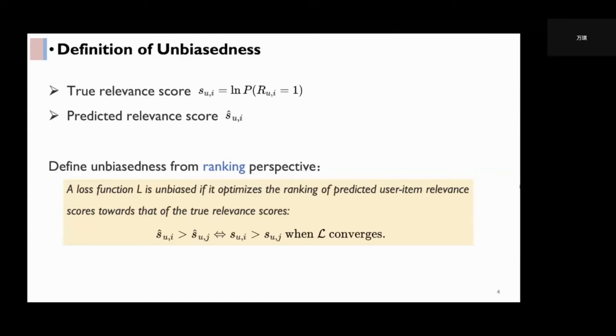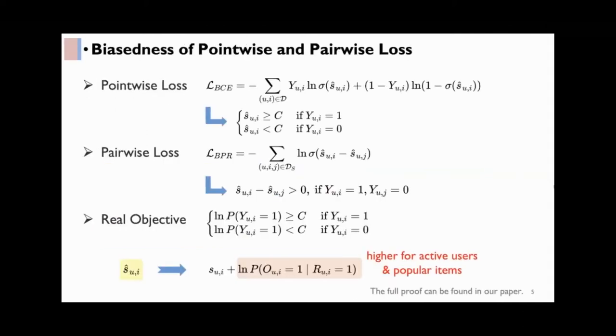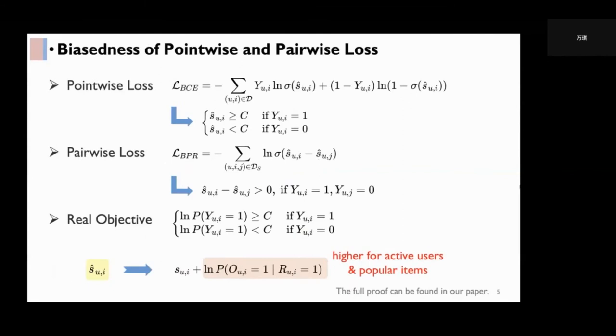Point-wise loss like binary cross-entropy BCE and pairwise loss like Bayesian personalized ranking BPR are the most commonly used loss functions.